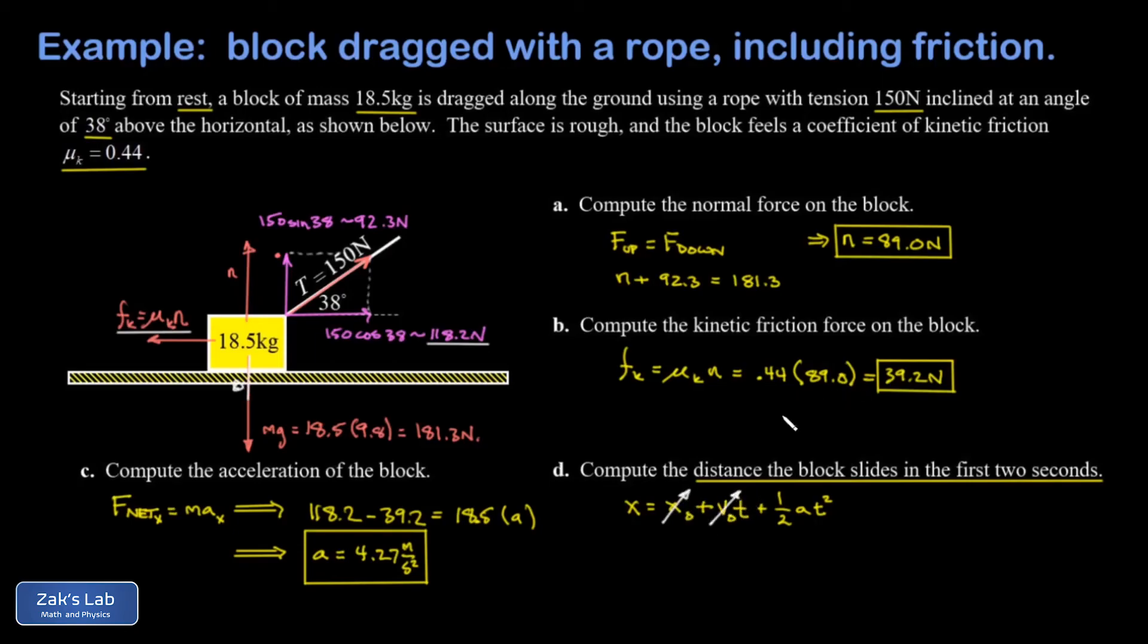All I've got is this one half a t squared term, so one half times 4.27 times t squared. We were told it runs for two seconds, so t is two and this gives me a sliding distance of about 8.54 meters and we're done.